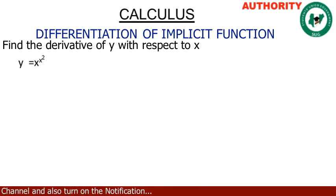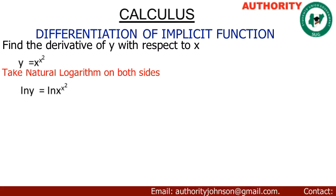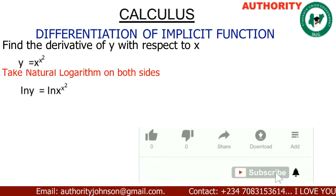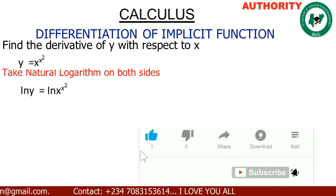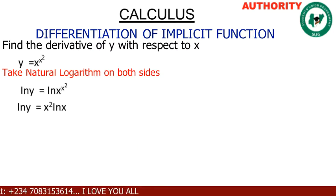This is an implicit function and we're going to carefully solve this. We're going to take the natural logarithm on both sides, giving us ln y equals ln of x raised to power x squared. The exponent x squared comes down in front of ln, so we have ln y equals x squared times ln x.